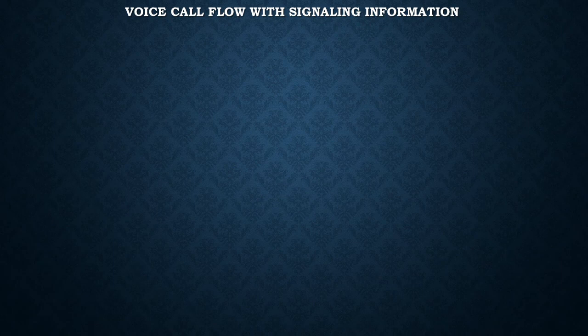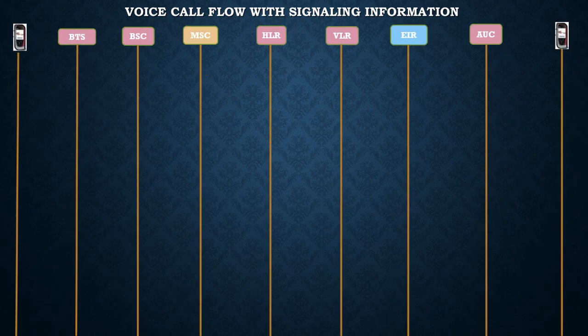Now let us see the diagrammatical representation of the call flow. The different network elements involved in the call flow are: the mobile subscriber (mobile handset), BTS, BSC, MSC, HLR, VLR, EIR, the authentication unit, and finally the end subscriber where the call has to be connected.